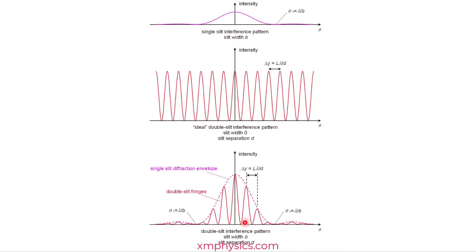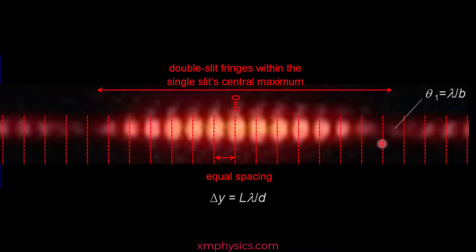The result looks like this. All these fringes are the double slit interference pattern — the red lines match the red lines here — but the fringes are not equally bright. They are kind of enveloped. Look at the dashed line: there's an envelope there, and that envelope is the single slit diffraction pattern. This envelope matches the single slit diffraction pattern. So when you see this pattern, you must recognize that the fringes are the double slit interference pattern, but their brightness is shaped by an envelope that is the single slit diffraction pattern.